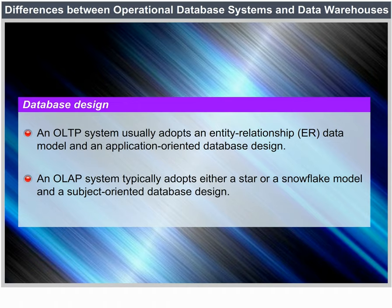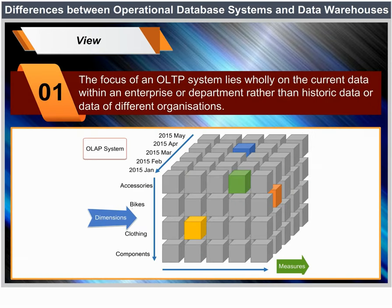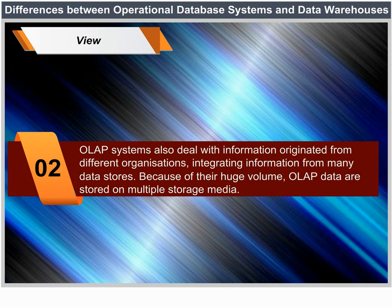Database design: An OLTP system usually adopts an entity-relationship (ER) data model and an application-oriented database design. An OLAP system typically adopts either a star or a snowflake model and a subject-oriented database design. An OLTP system focuses mainly on current data within an enterprise or department. OLAP systems deal with information that originates from different organizations, integrating information from many data stores. Because of the huge volume, OLAP data is stored on multiple storage media.